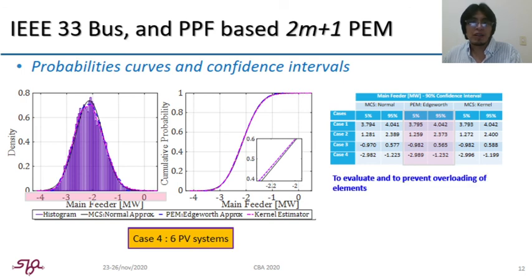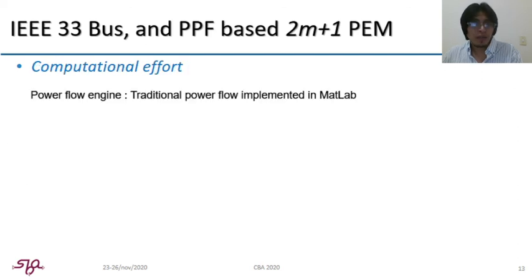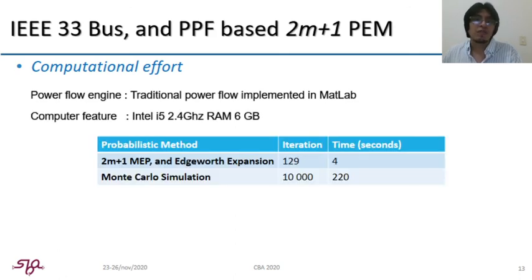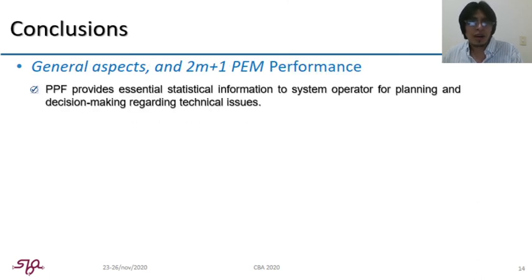Implanting the confidence interval of branch power flow and asset utilization is of great importance to prevent overloading. Finally, computational effort comparison. For this study, a traditional power flow is carried out within MATLAB environment and using the following computer features. The point estimate method combined with Edgeworth expansion takes on average four seconds. And the Monte Carlo simulation for benchmark results considering 10,000 scenarios takes on average 220 seconds.